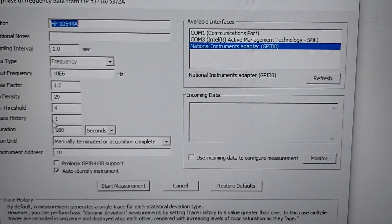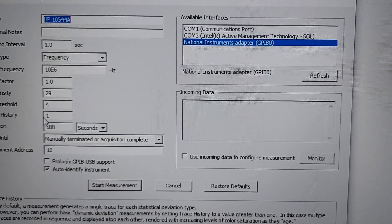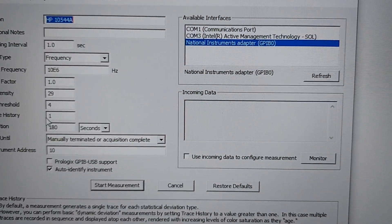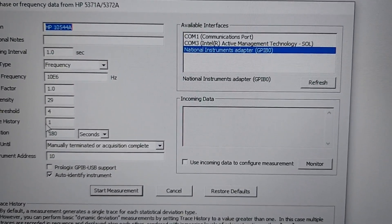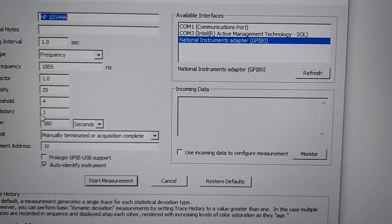Here are our basic parameters in Time Lab. We're going to run for 180 seconds, which is three minutes, at a reference frequency of 10 megahertz. Yeah, I think that's it, so there we go.